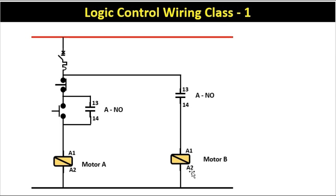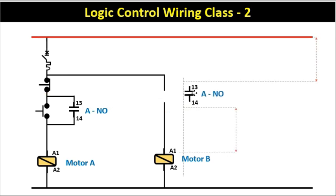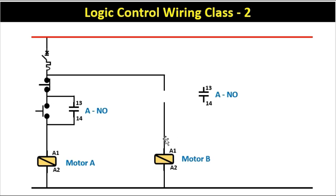It means when motor B is started, motor A should turn off automatically after 5 minutes. We have to modify this circuit diagram. So first of all, the NO contact which is connected in series — we will remove this from here. For turning motor B on and off, we will use push buttons.